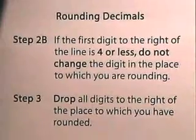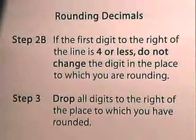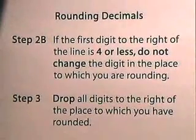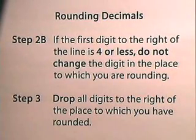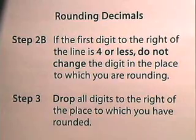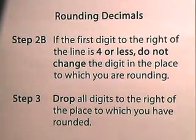Step two, part b: if the first digit to the right of the line is four or less, do not change the digit in the place to which you are rounding. Step three: drop all digits to the right of the place to which you have rounded.